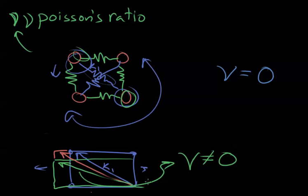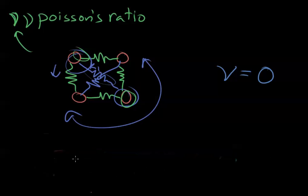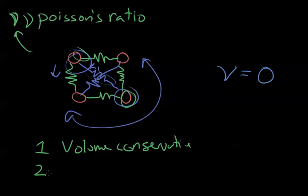Instead of this red arrow going here, which it doesn't want to do because it doesn't want to extend, we get this green arrow which actually happens. This green arrow is the reason why this is not equal to zero, because there's a coupling between these atoms. So the explanation of Poisson's ratio is: first, volume conservation, and second, the spring effect.